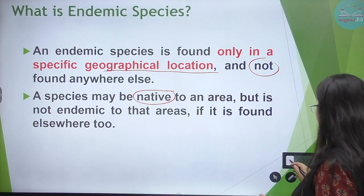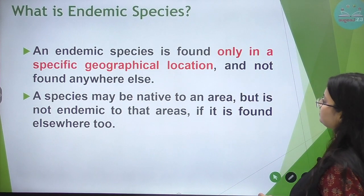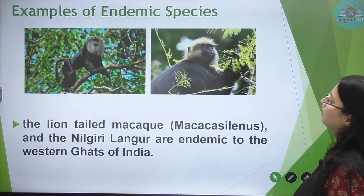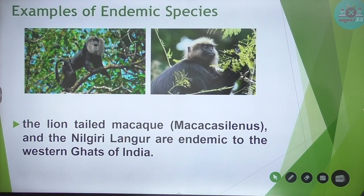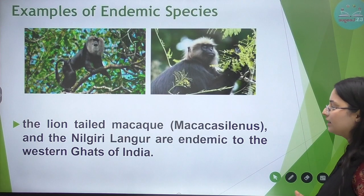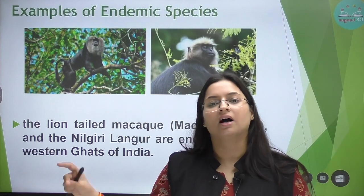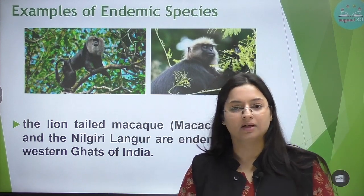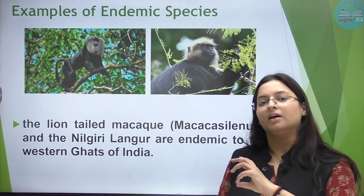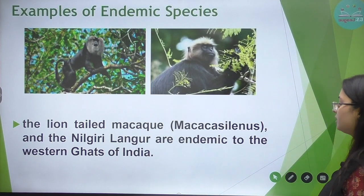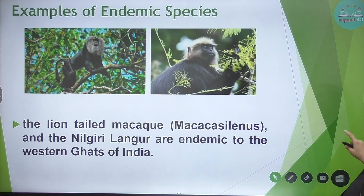Let's understand it with some examples. The first example is the lion-tailed macaque and Nilgiri langur. They are found in the Western Ghats region and are endemic to it. These are two examples of endemic species.